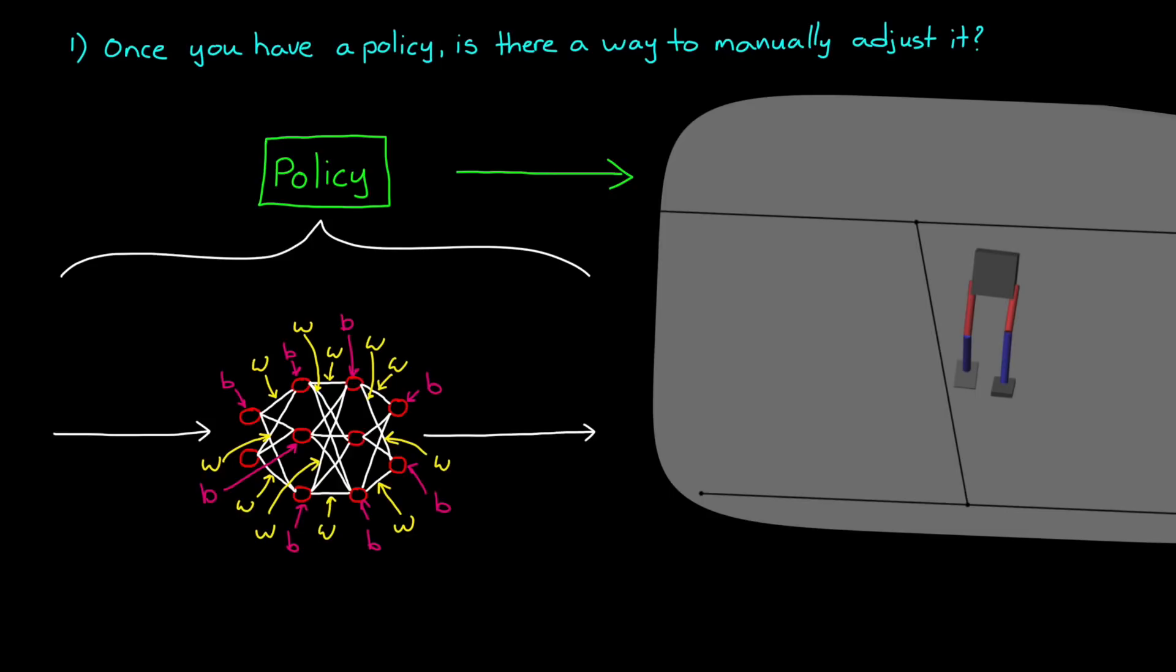And the combination of these values and the structure of the network creates a complex function that maps high-level observations to low-level actions. This function is essentially a black box to the designer.